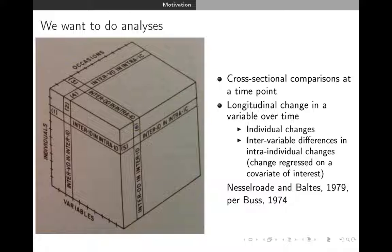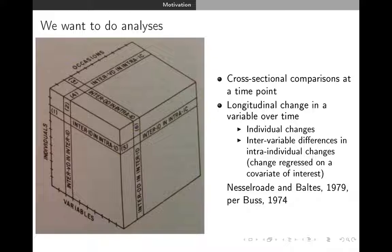At the end of the day, we all want to do analyses. Maybe these analyses are cross-sectional comparisons, or maybe we want to look at longitudinal change over time — individual changes or change regressed on a covariate of interest. This is a complicated rubric from Nesselroade and Baltes, called a variable box, where you can conceptually think about differences in occasions, differences in individuals, and differences in variables.